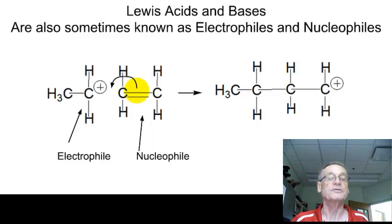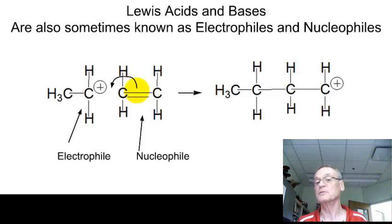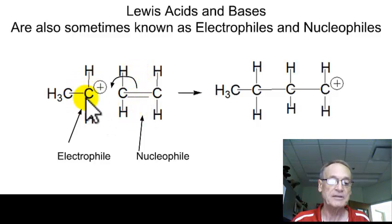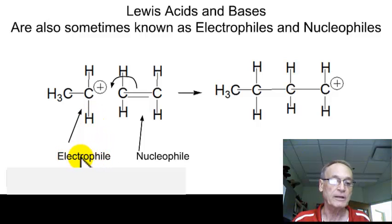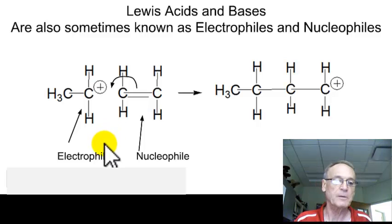Lewis acids and Lewis bases is a terminology that organic chemists don't use all that often. We use the terminology electrophiles and nucleophiles. We'll talk about nucleophilic substitution, electrophilic substitution, and nucleophiles a lot in future chapters. Basically, a Lewis acid is what we sometimes call an electrophile, meaning a lover of electrons. 'Phile' means lover of, and 'electro' stands for electrons, so it really wants to find electrons — it loves electrons — it's going to go out and find a pair of electrons.